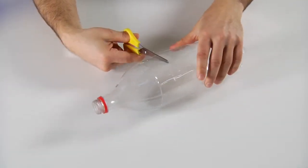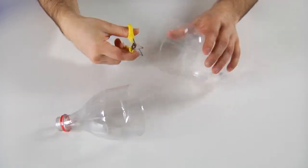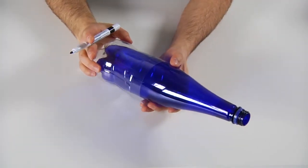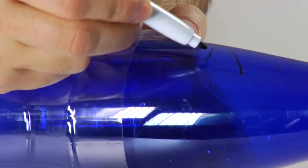Cut the big bottle in half with the scissors. Put the little bottle into the one you've just cut and trace a line three centimeters higher than the edge.